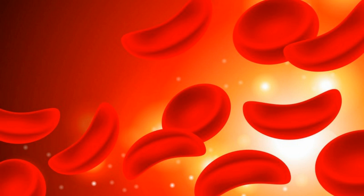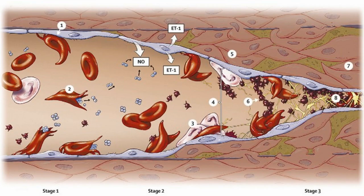Sickle cell disease encompasses a group of pathological manifestations, while sickle cell anemia is one such pathological manifestation of sickle cell disease. This stands out as the key difference between sickle cell disease and sickle cell anemia.